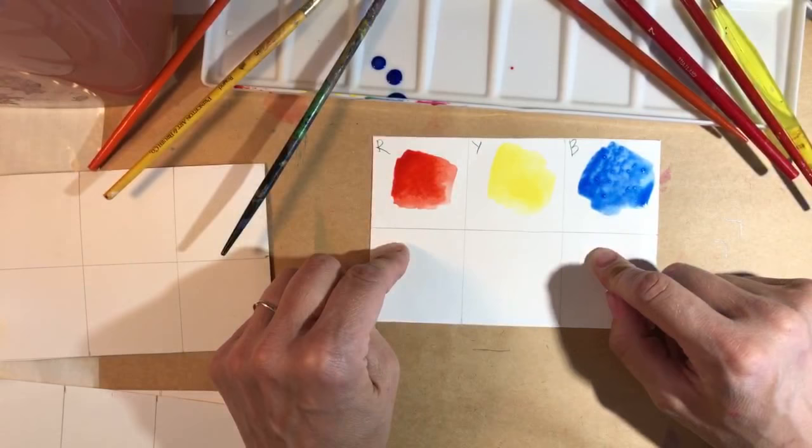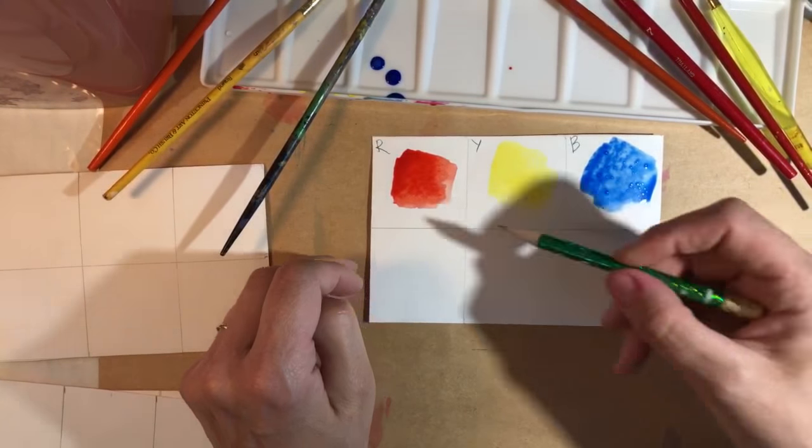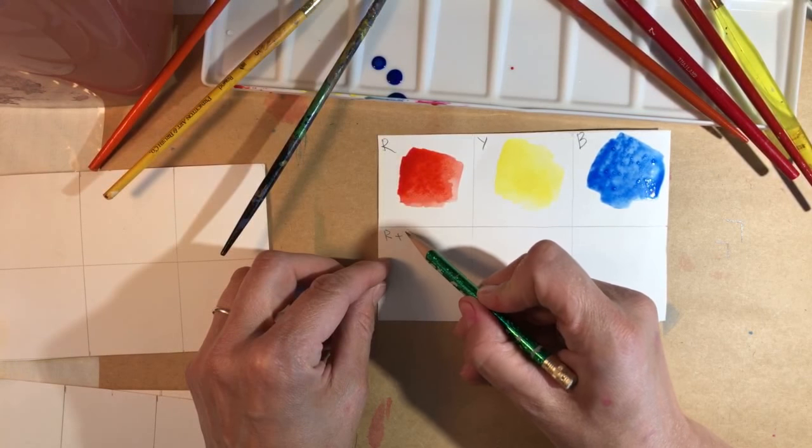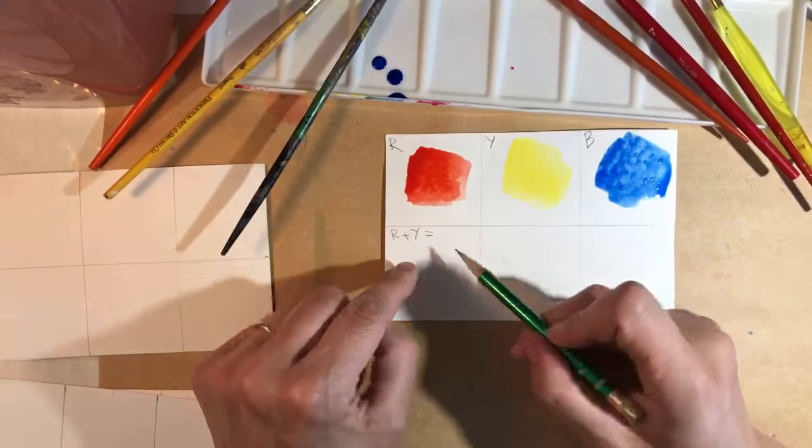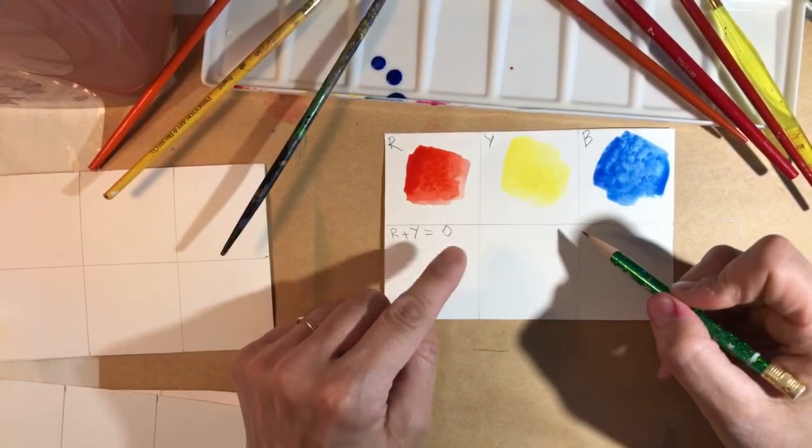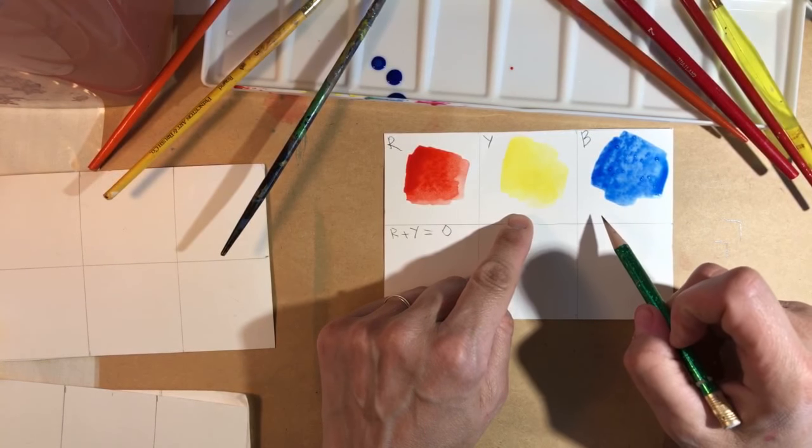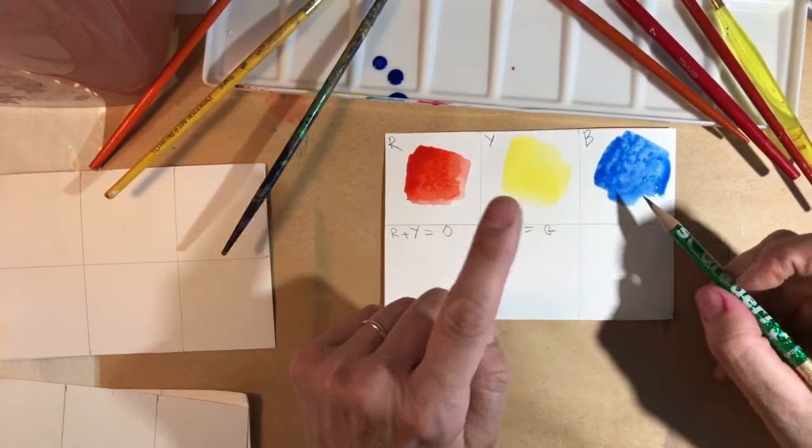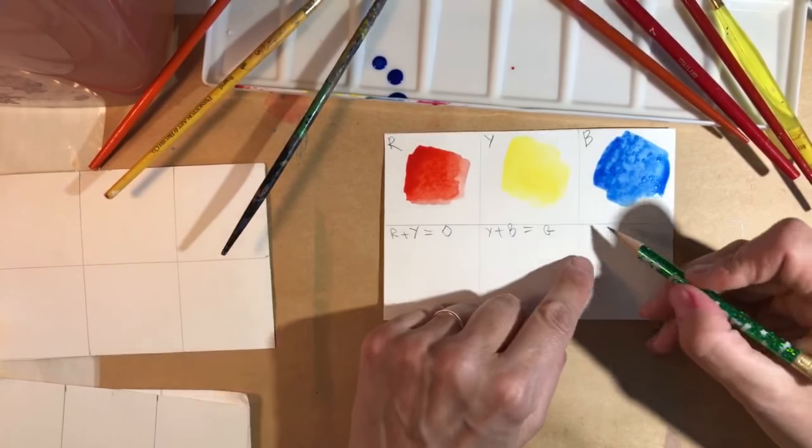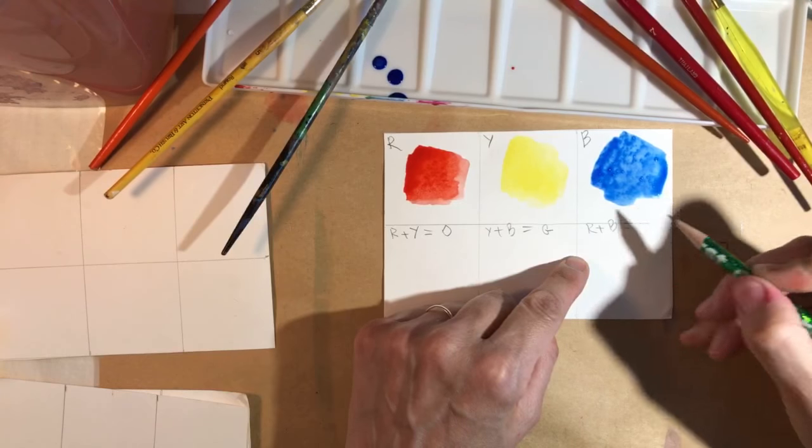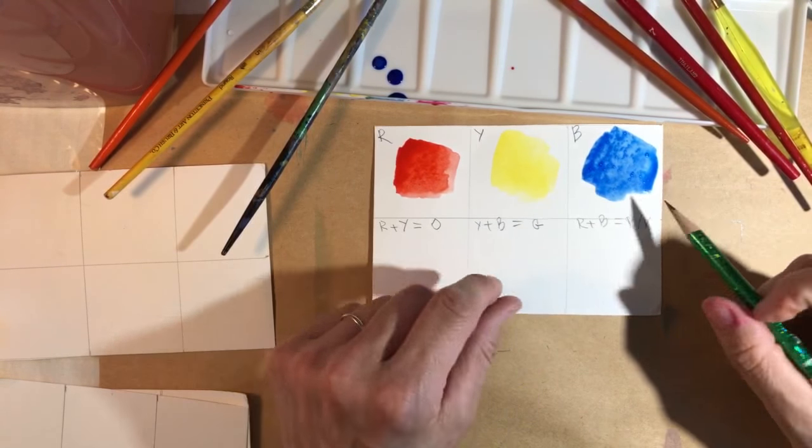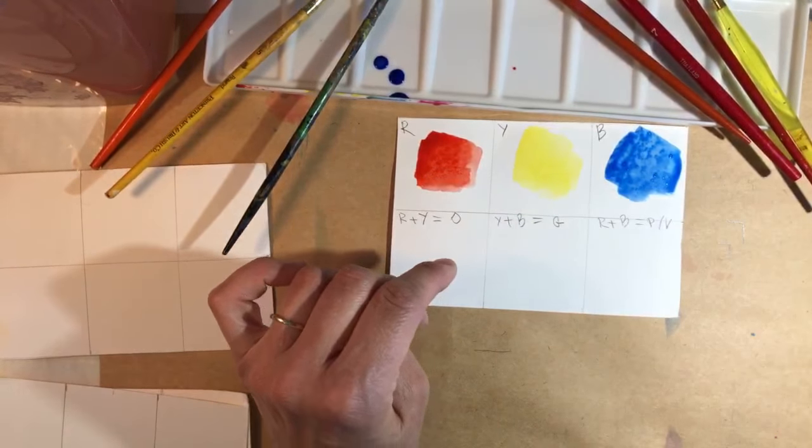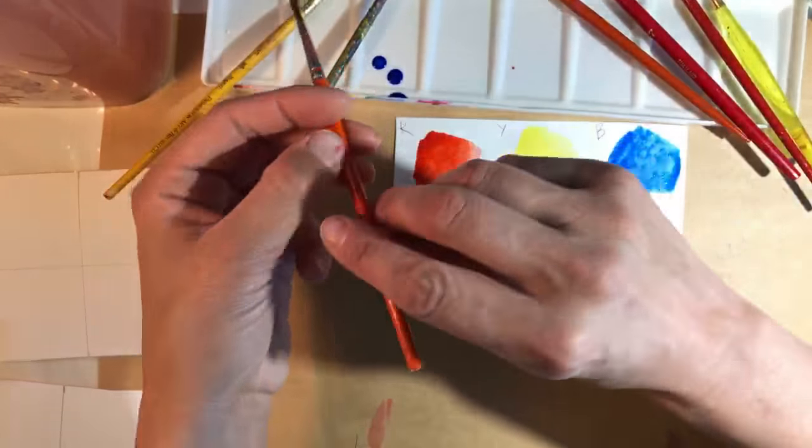When we start mixing those colors though, we end up having a little trouble. When we start combining red plus yellow, let's do mathematical equations over here, we're assuming we'll get orange. Then when we combine yellow and blue, we're assuming we will get green. And the last one, red plus blue, we hope to get purple or violet, depending on how much red or blue we're gonna put in.